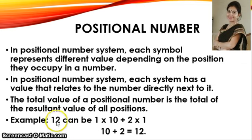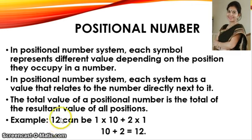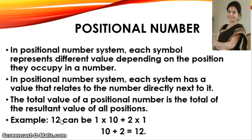For example, consider the number 12. For the digit 2, its value depends firstly on the digit itself (which is 2), secondly its position (which is the 1's place), and thirdly the base of the number system. There are different number systems — decimal, octal, binary, and hexadecimal — and we will study them in the next sections. These three points are essential when describing the value of a digit in a positional number system.